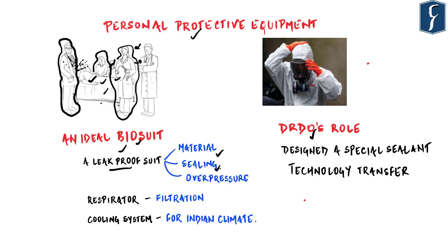For a leak-proof suit, the material should be non-permeable, the sealant should be long-lasting and adhesive, and there should be an over-pressure mechanism inside the biosuit. The suit is designed to maintain positive pressure inside to prevent contamination to the wearer even if the suit leaks or fails — the higher pressure of air inside prevents outside air from entering, providing a double-layer safety mechanism.